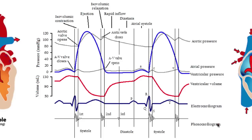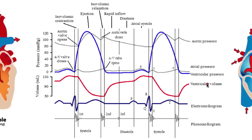Here we're looking at the phonocardiogram — in other words, we're looking at the sounds that we hear when the heart beats, when we go through the different stages of the heartbeat. Then here we're looking at the electrocardiogram, which we've looked at in a previous episode. You can always revisit that to get a good understanding of how the ECG or EKG works. Then we're looking at the ventricular volume — the amount of blood, the volume of blood in the ventricle, and specifically we're looking at the left ventricle.